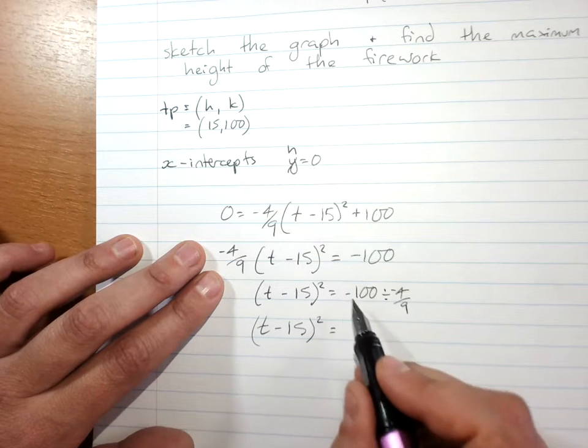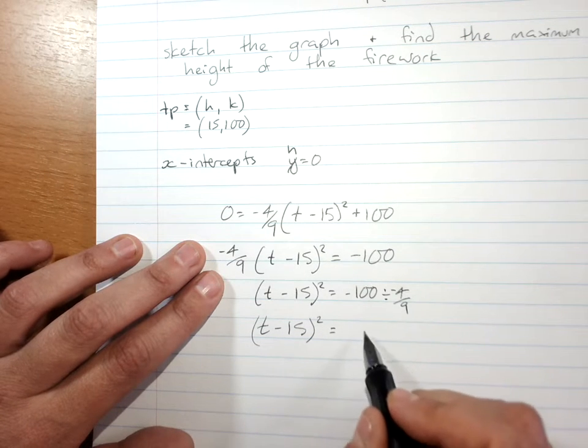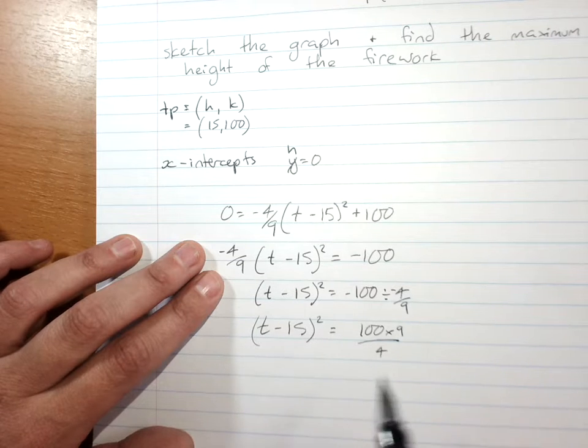So that will be negative divided by negative will give me a positive. That will be 100 times 9 over 4.